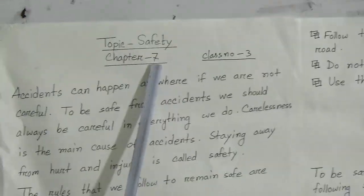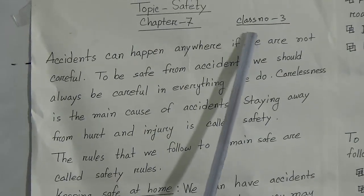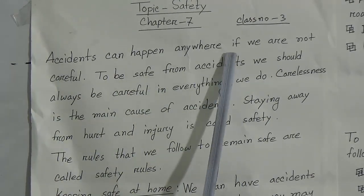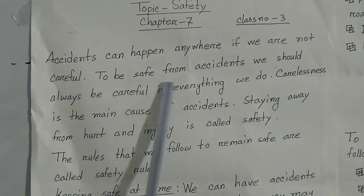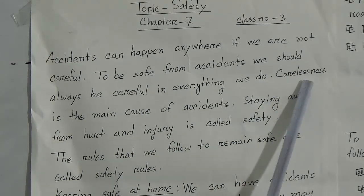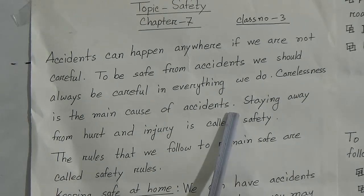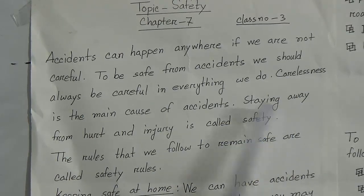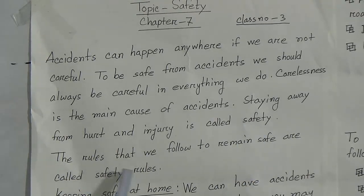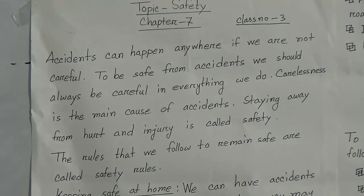Dear students, our topic is Safety. This is Chapter 7 in your book, and this is Class Number 3. Accidents can happen anywhere if you are not careful. To be safe from accidents, we should always be careful in everything we do. Carelessness is the main cause of accidents. Staying away from hurt and injury is called safety. The rules that we follow to remain safe are called safety rules.